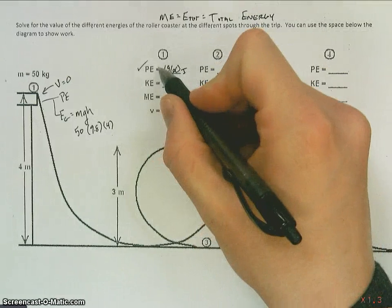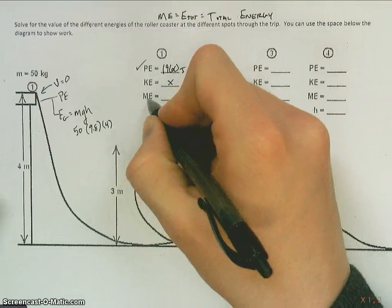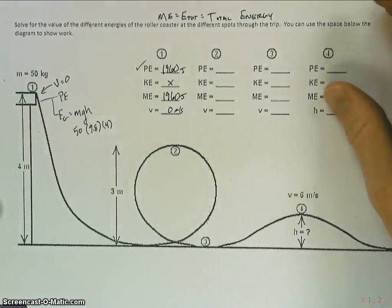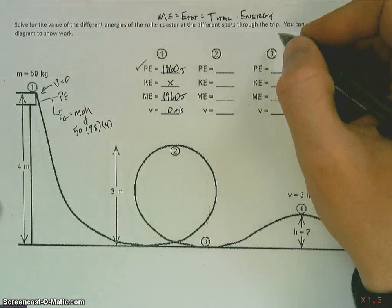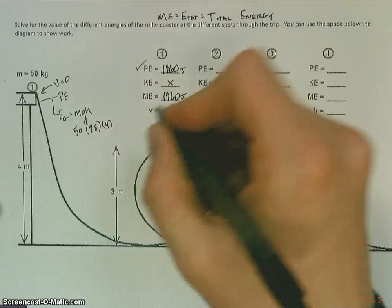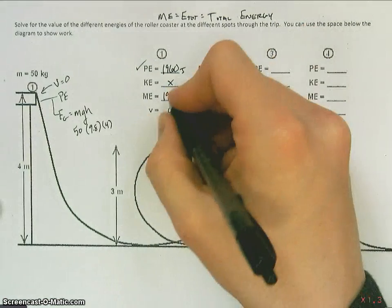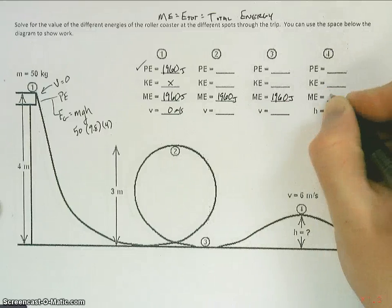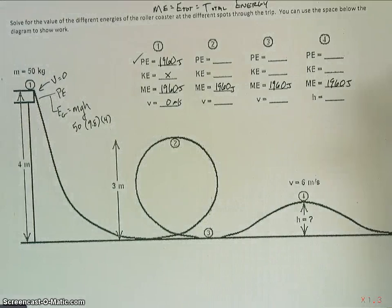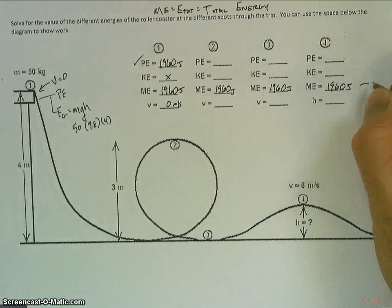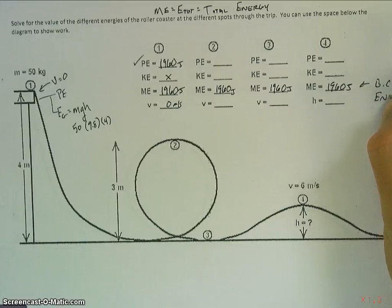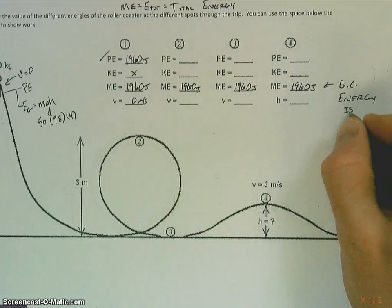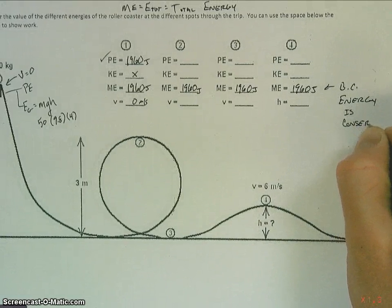Now if all of our energy is potential, we have no kinetic, that means our mechanical energy or our total energy at this location is also 1960. And actually energy is conserved, that's the whole point of this problem. So if energy is conserved, that means the total energy here is the same as it is here, here, and here. So I can go ahead and I can say that each one of these has 1960 joules because energy is conserved.